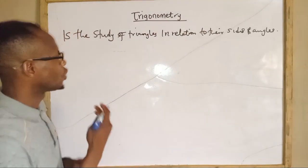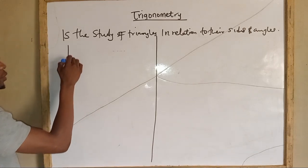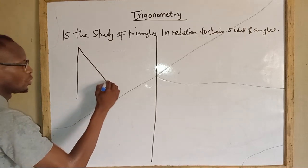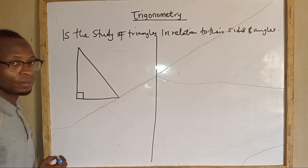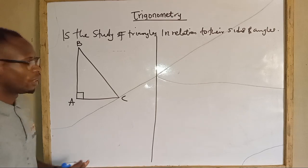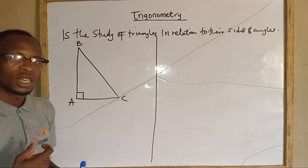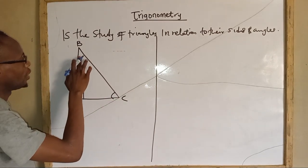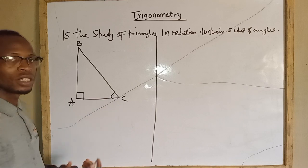Let's consider an illustration. I'm considering a right angle triangle, which means it has a 90-degree angle. We have our angle of 90 here. There is another angle in this right angle triangle called an acute angle — acute angles are angles that are less than 90 degrees, so it can be positioned at either of the remaining corners. This is an acute angle because it is less than 90.